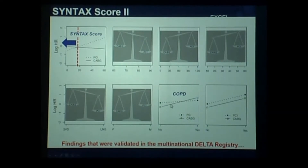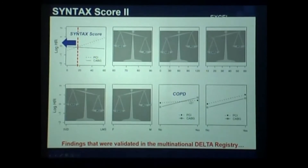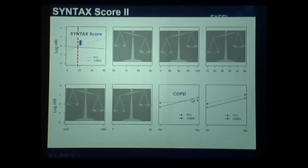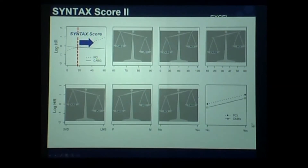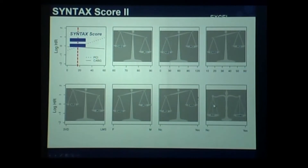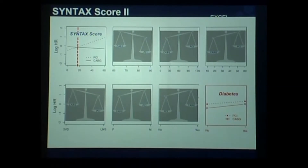For COPD — look at the solid line. It's clear that COPD crosses the line — there is interaction. If you have COPD, it's better to go to PCI, and then you can be a little more ambitious with the anatomic Syntax score. Peripheral vascular disease is very important, but runs in parallel, so no interaction. And diabetes also runs in parallel at the low level — no interaction.